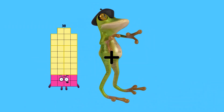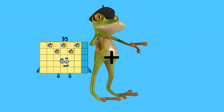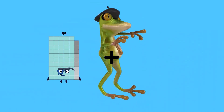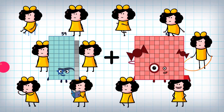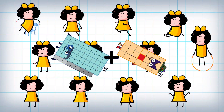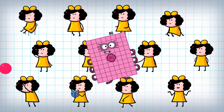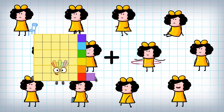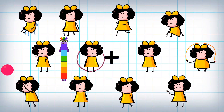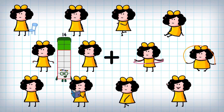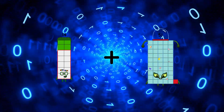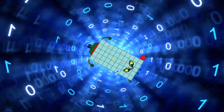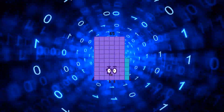59. 69 plus 49. 79 plus 21 equals 80. 14 plus 51 equals 65.